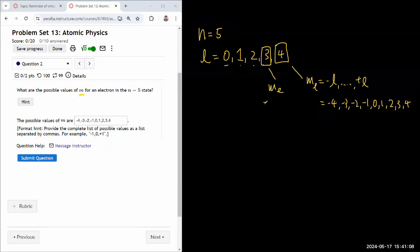my possible values of m sub l is minus 3, minus 2, minus 1, 0, 1, 2, 3. So I counted 9 here. I count 7 here.